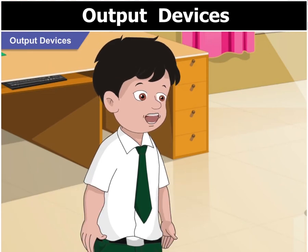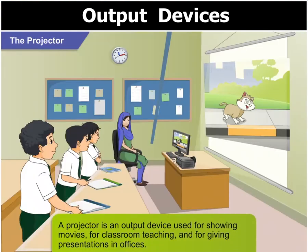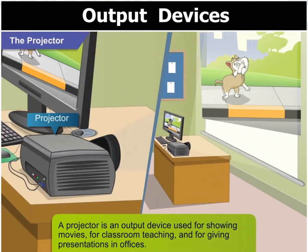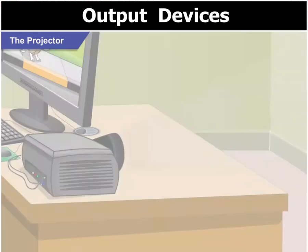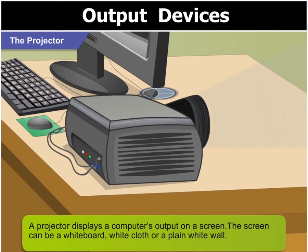Toggle, what are projectors? A projector is an output device. It can be used to show movies, to teach in schools, and to give presentations in offices. It displays the computer's output on a screen. The screen can be a whiteboard, a white cloth, or even a plain white wall.